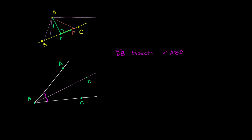Now, the whole reason I started this video talking about distances between points and lines is that I want to show you that any point on an angle bisector is equidistant from the sides of the angle. And then we're going to go the other way, to show that any point equidistant from the sides of an angle is going to be on the angle bisector.